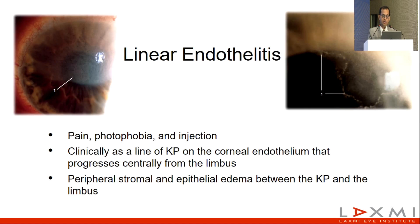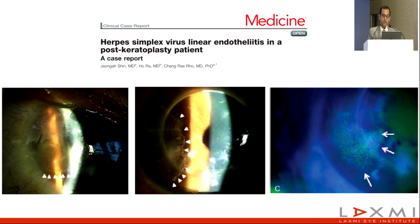Linear endothelitis is a very rare entity. It presents with pain, photophobia, and injection. Clinically, it is seen as a line of keratic precipitates on the corneal endothelium that progress centrally from the limbus, with peripheral stromal edema and epithelial edema between the KPs and the limbus. A paper described a case of HSV endothelitis in a post-PKP patient, clearly showing an area of involvement in the graft versus a normal cornea.